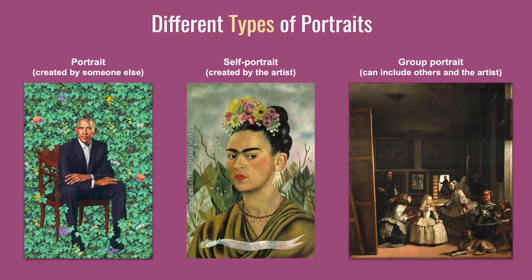Just like there are different styles of portraits, there are also different types of portraits. The first type is a standard portrait, which means it's a picture of a person created by somebody else. A self-portrait, like the one in the middle of artist Frida Kahlo, is created by the artist of the artist. The one on the right-hand side is a group portrait, which can include other people as well as the artist, or just other people.